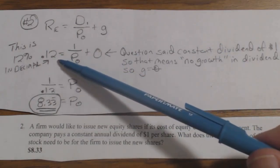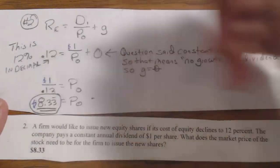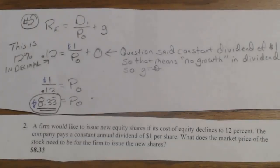So this is 0.12 equals 1 over P0 plus 0, well that's just 0. Then you just rearrange this to get 1 over 0.2 equals P0.